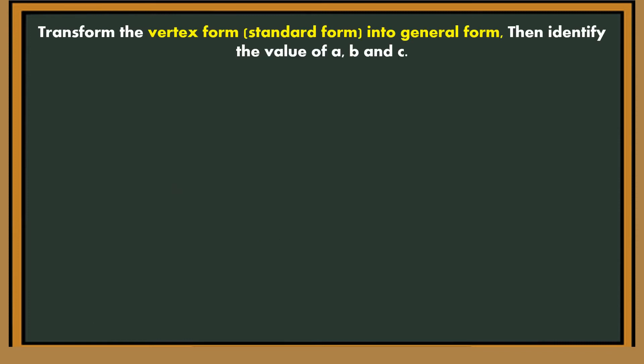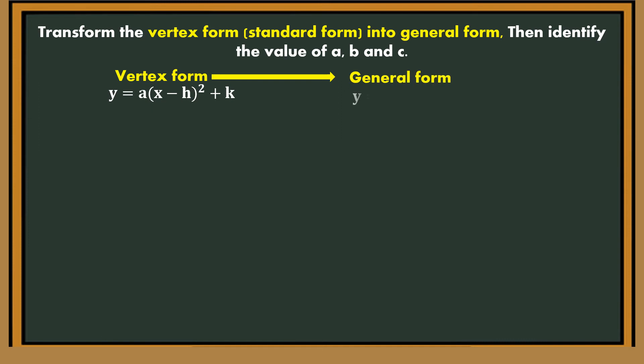So that was from general form to vertex form. Now, we're going to go from vertex form into general form. Always remember, the vertex form is y is equal to a, quantity x minus h, quantity squared plus k. We're going to transform that into general form: y is equal to ax squared plus bx plus c.